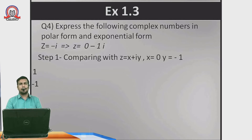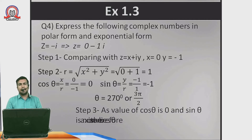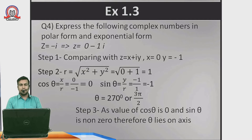Step 2: find r, cosθ, sinθ, and θ. r = √(x² + y²) = √(0 + 1) = 1. Then cosθ = x/r = 0/1 = 0, and sinθ = y/r = −1/1 = −1.